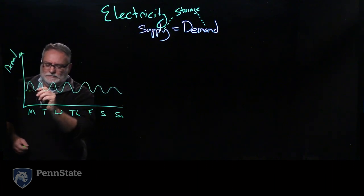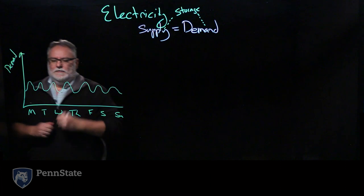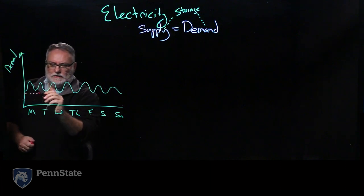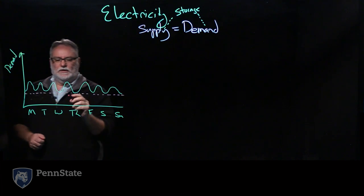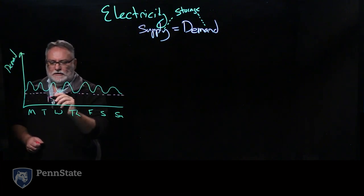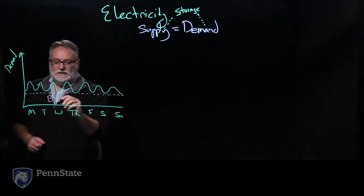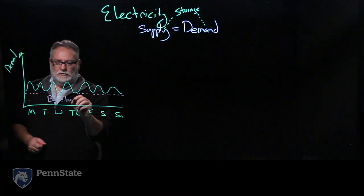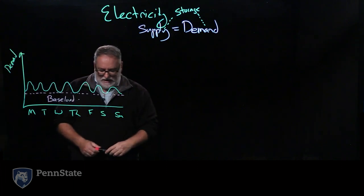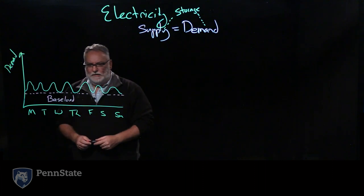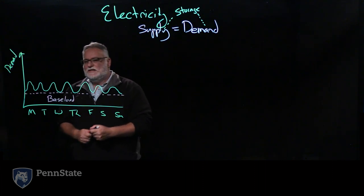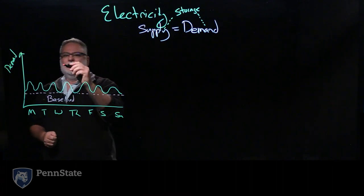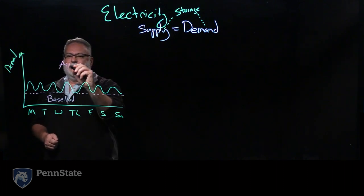I've drawn that to be relatively uniform. If we just take a look, this is the lowest amount of electricity used in the week, and that would be the base load. Of course, maybe we'd have a day that might have higher usage than others. But let's say this is April in Pennsylvania.